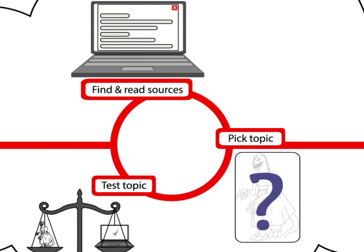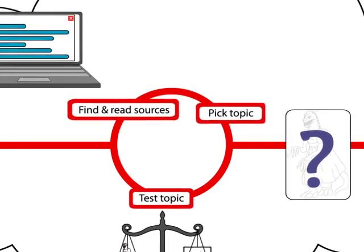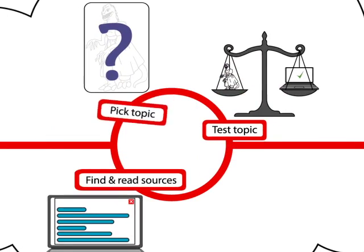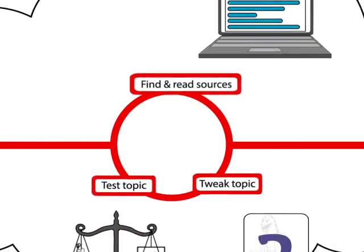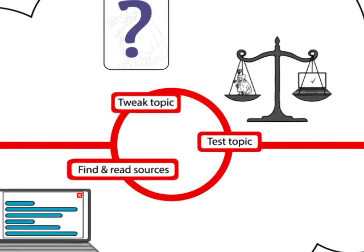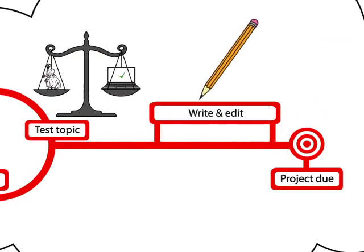At this point, you might find that the published research leads you away from your original topic. That's okay. You can let the research you find guide you and tweak your topic a bit. And by the time you've gone through this cycle a few times, you may find that you have enough sources to start writing and editing your paper.